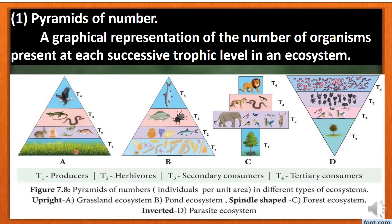This is a grassland ecosystem. In the grassland ecosystem, there are producers, next primary consumers, secondary consumers, and tertiary consumers. The number of organisms at the first trophic level is always greater than the next level. So the number decreases going upward, and this pyramid is always upright.